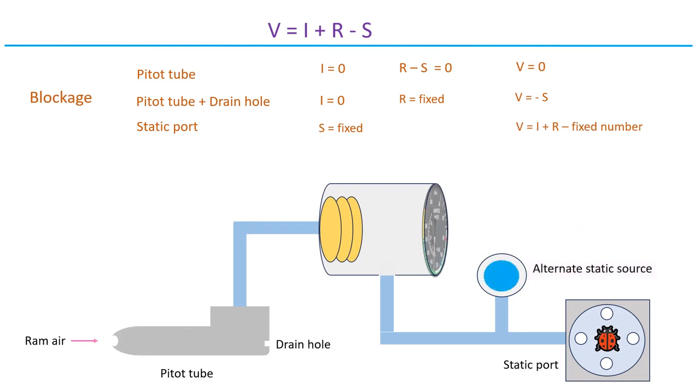Planes often have an alternate static source located in the flight deck as backup for a blocked static port. This source typically reads lower pressure than the actual outside pressure. It's similar to dealing with a clogged static port during descent, where you end up subtracting less than you should. The airspeed usually reads higher when using alternate static source. To get the lowdown on how the alternate source behaves, it's always smart to flip through the POH or AFM.